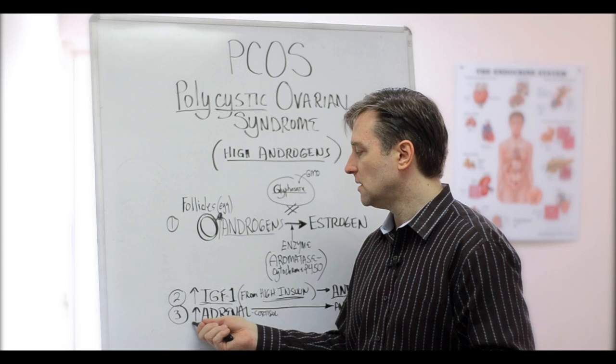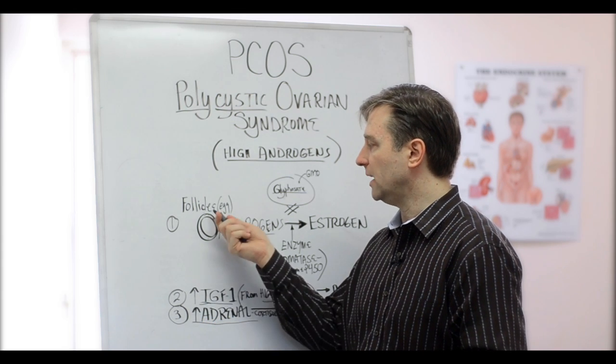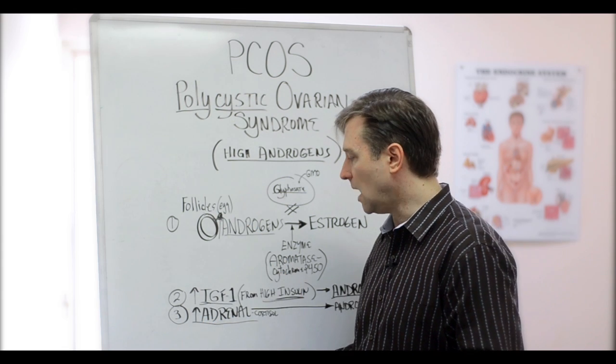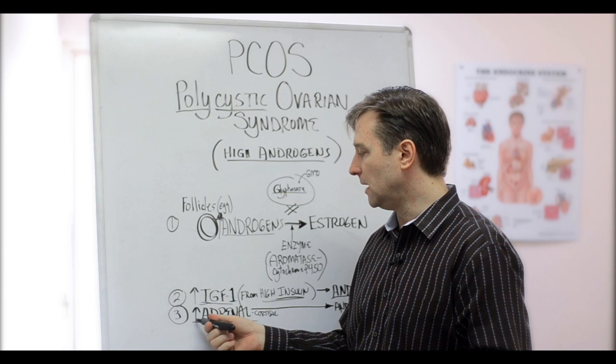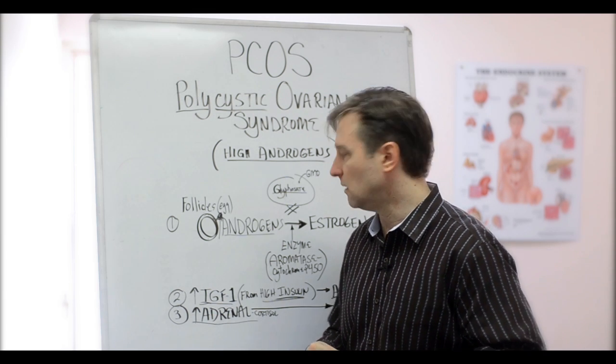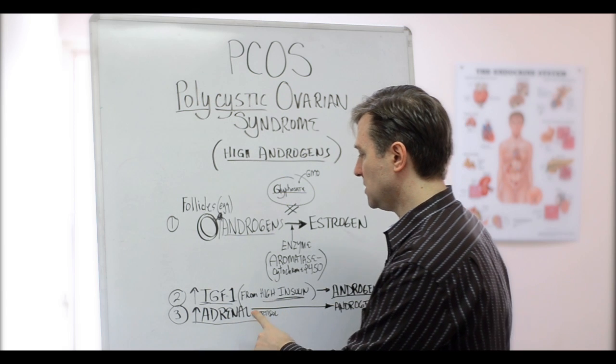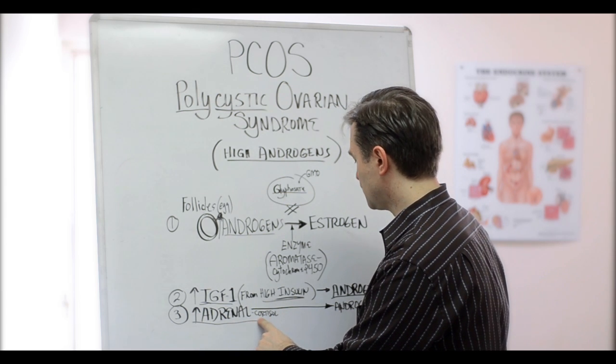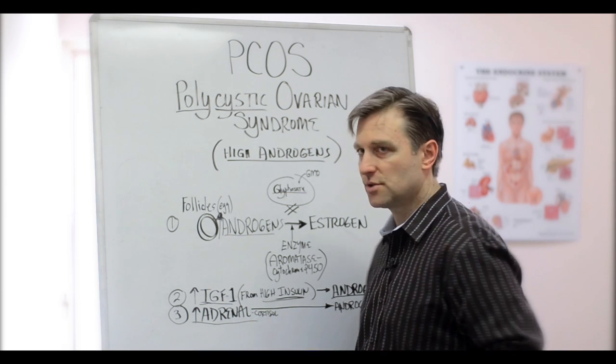Cause number three is not only does the ovary make androgen in a female, but the adrenal also makes androgen too. So, an overactive adrenal will produce more androgens from stress, and that's another source.